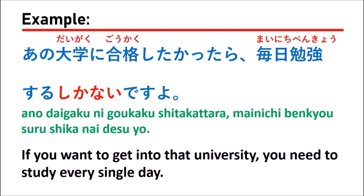The fourth example means: if you want to get into that university, you need to study every single day. For example, if you want to enter Tokyo University — the top university in Japan — it's really hard. You cannot buy your way in or take the exam for someone else, so you have to study by yourself. You can say: 毎日勉強するしかないですよ (Mainichi benkyou suru shika nai desu yo) — you have to study every single day.